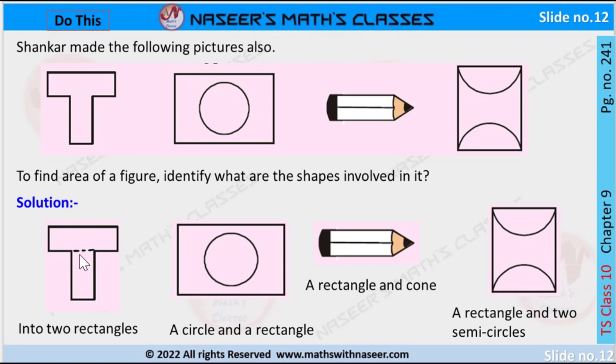Second figure we have a circle and a rectangle. Third one is in pencil shape - it is a rectangle and a cone. Next, the fourth one we have one rectangle and two semicircles.